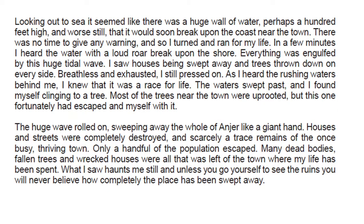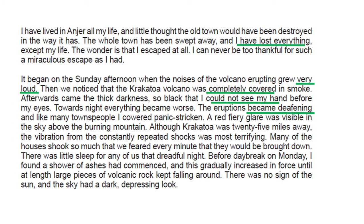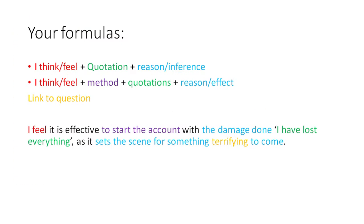Now we're thinking about the write-up — you've already done this last week and have feedback on it. The formula is: I think/feel → quotation → inference, then I think/feel → quotation → method → reason or effect. Remember to link to the question. I've done the first three points for you, including the idea of linking 'very loud' to 'became deafening,' since we haven't done that approach often. The colours link to the formula at the top so you can label them, but you don't have to use these three if you prefer your own.